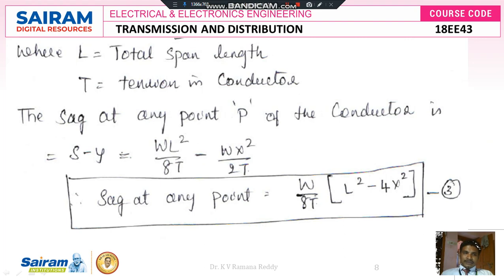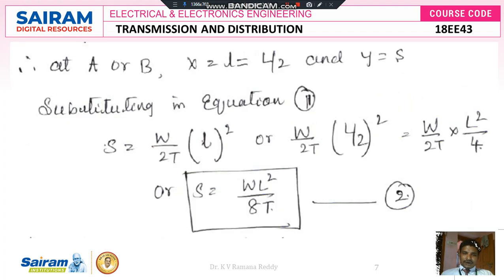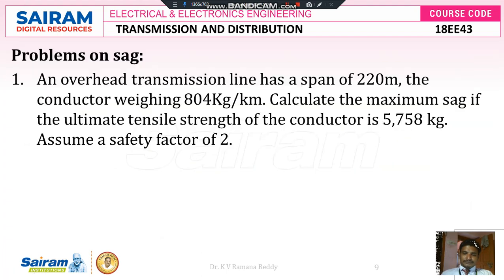Multiplying through gives the maximum sag formula: S = wL²/8T, where capital L is the total span length and capital T is the total tension of the conductor. The sag at any point P is S − y = wL²/8T − wx²/2T = (w/8T)(L² − 4x²). The maximum sag formula is S = wL²/8T.